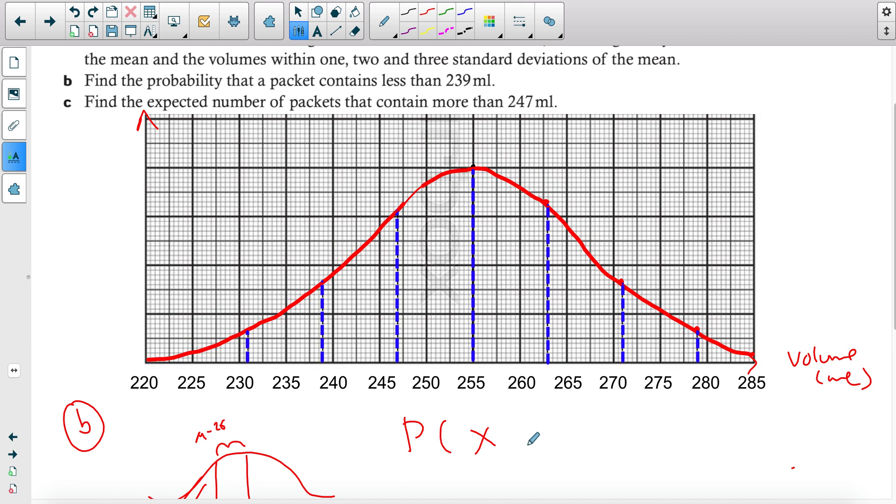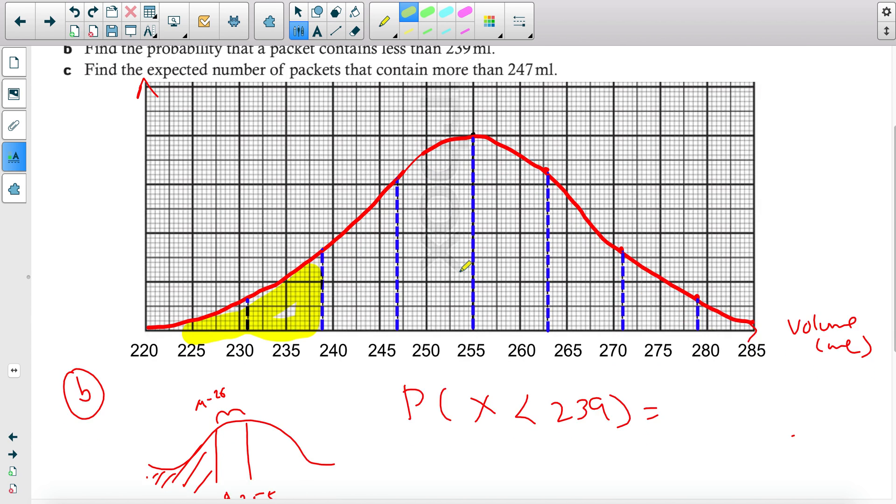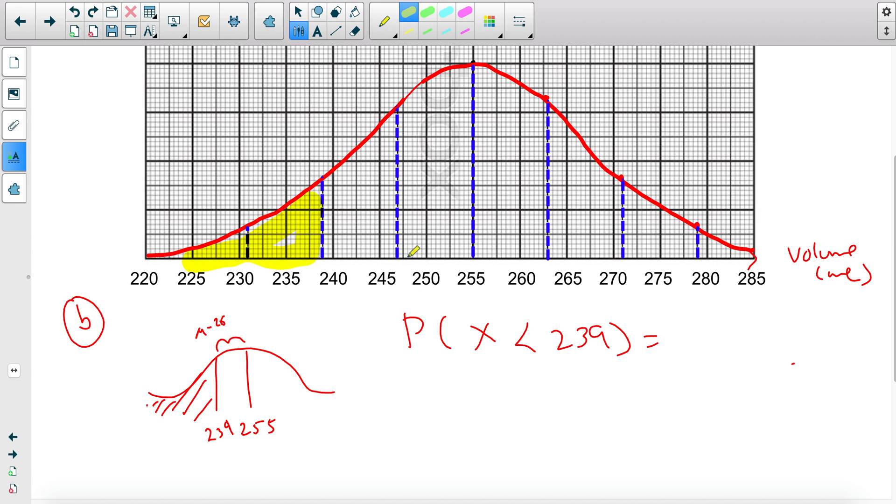The probability that a packet contains less than 239 ml—be comfortable with this notation. I'm going to highlight this area. Whenever a question asks you for a less than area, not a range—if it asks for between 247 and 263, we know that within one standard deviation is 68%, and you use the percentages you know. However, because it wants less than, I'm going to use the fact that halfway from the mean up to the end is 50%. Because I have these last end of the tails that I don't know what percentage they could represent. So I have this 50%, but I don't want these two areas.